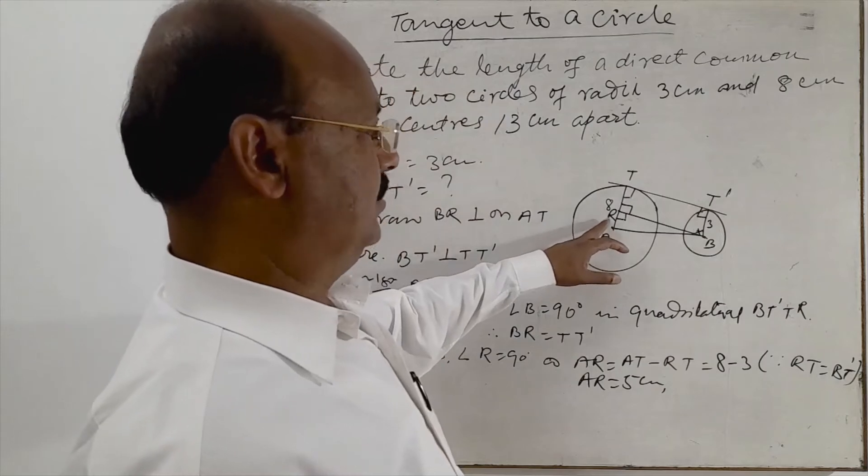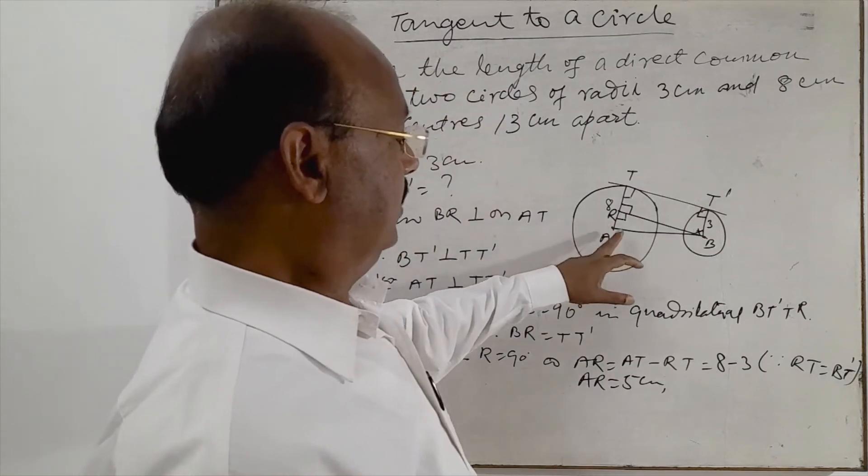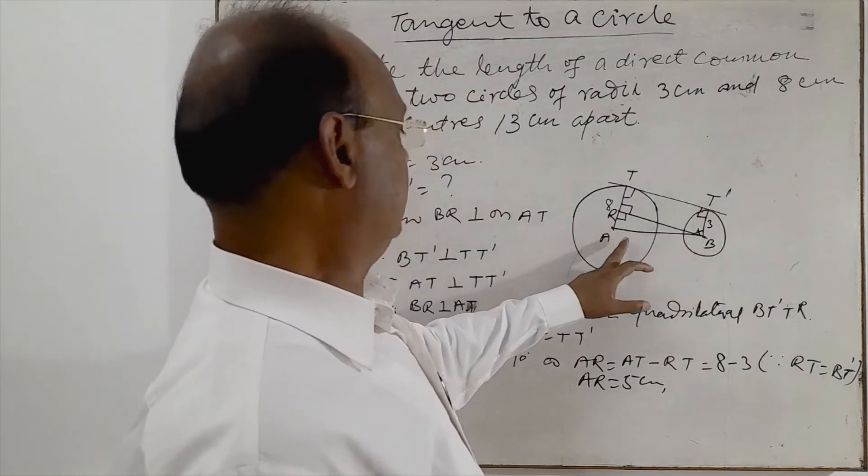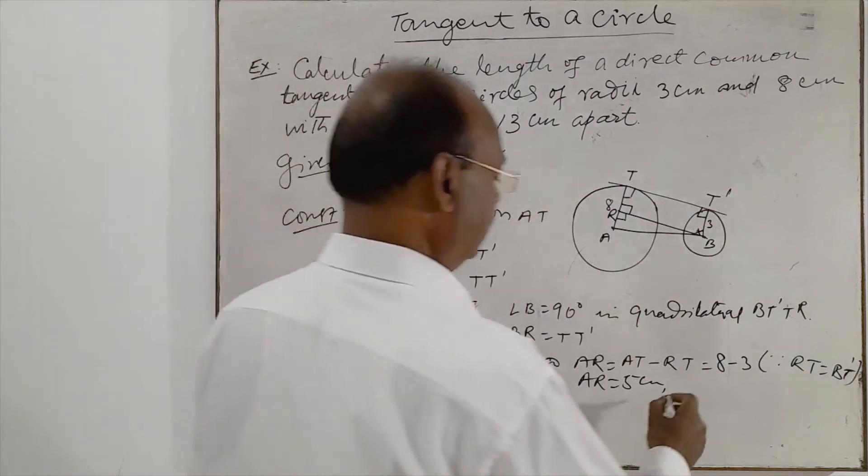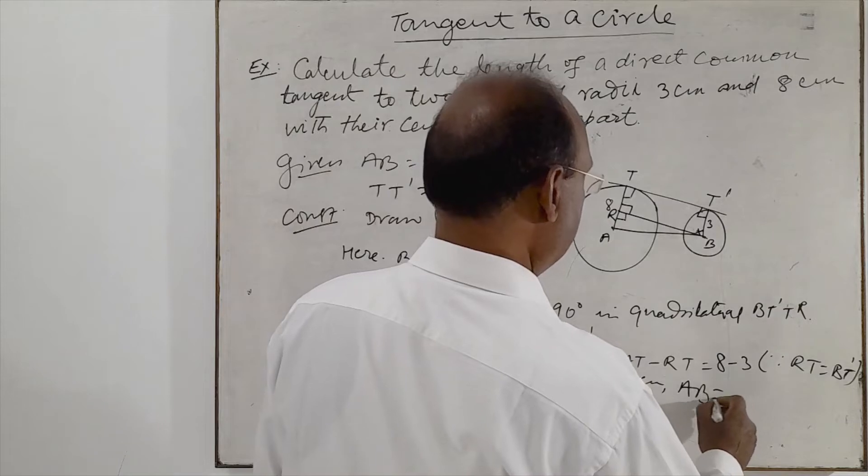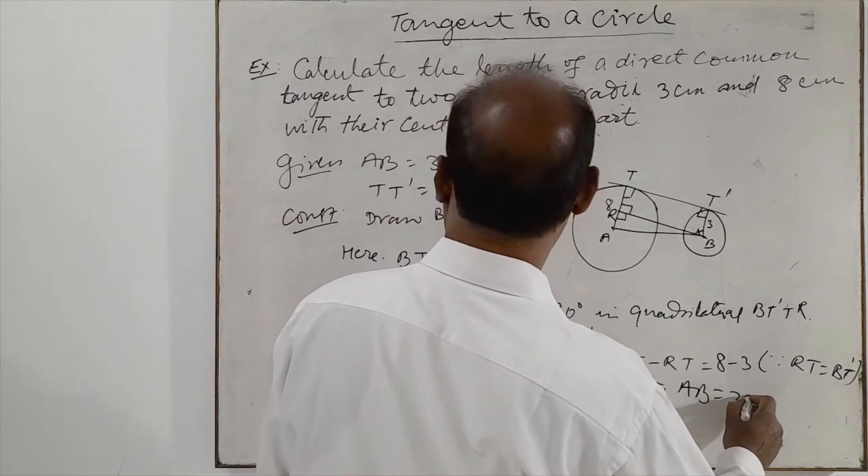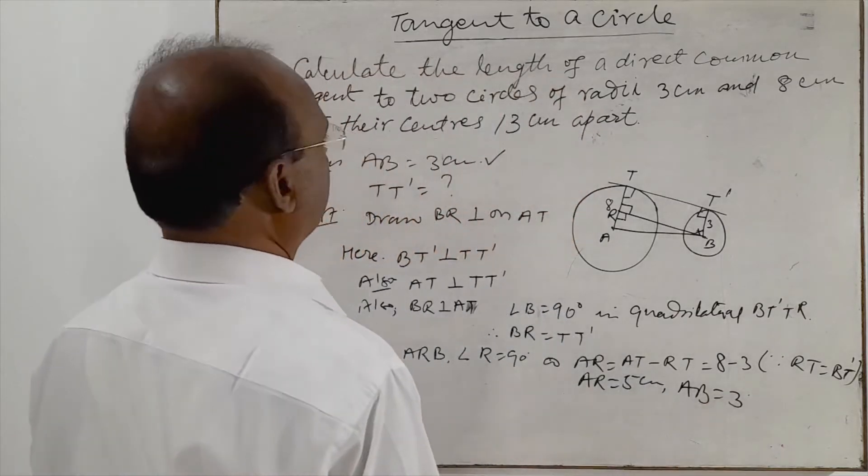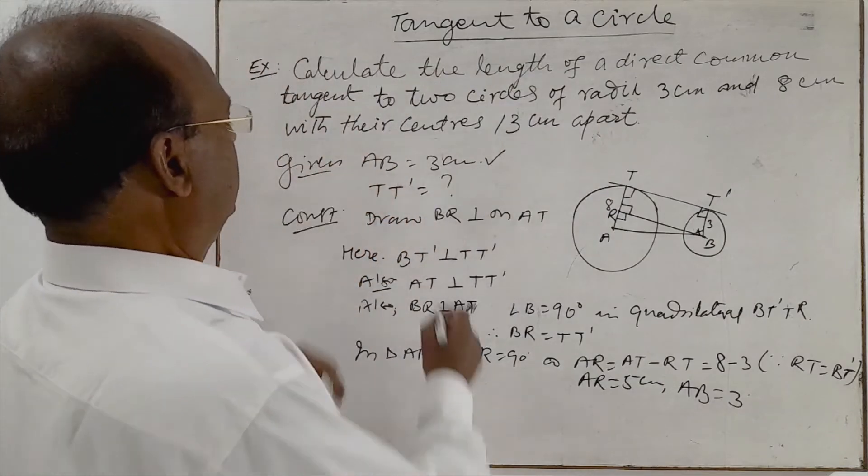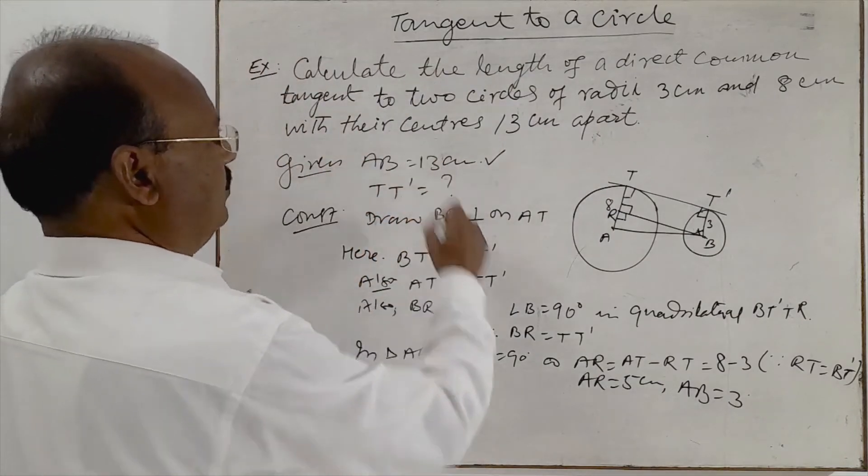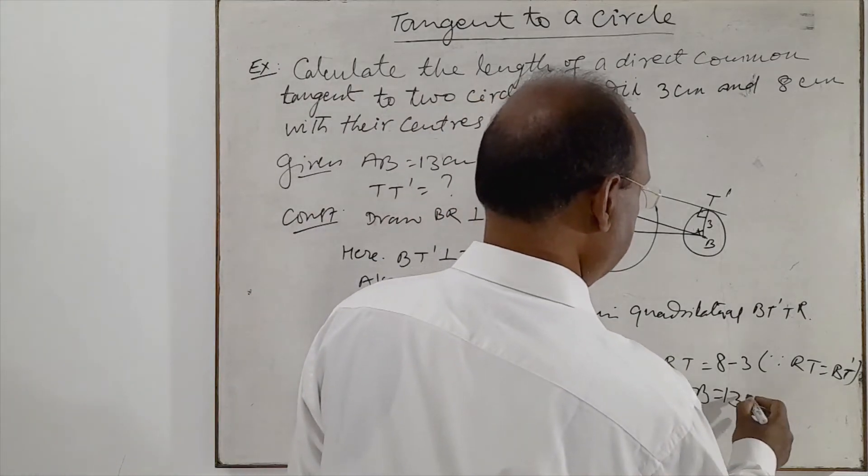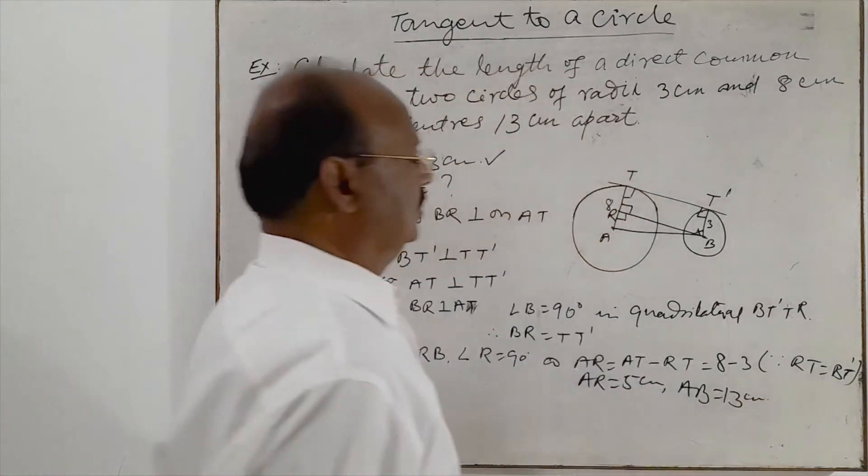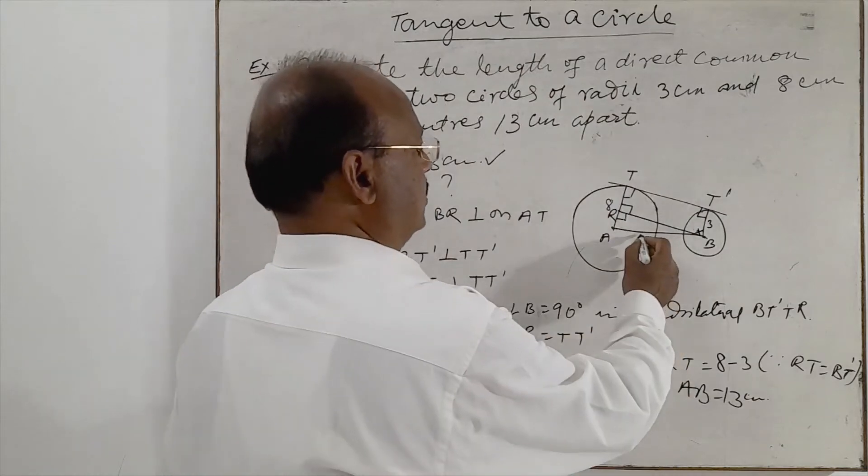AR is equal to 5 cm. And distance between these two centers means AB is already given. This is 13 cm. AB is equal to 13 cm.